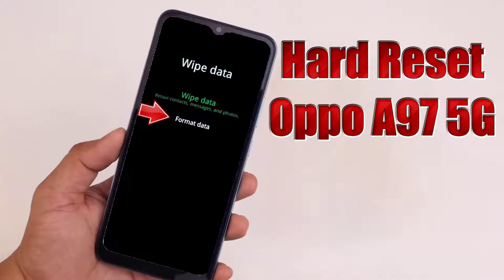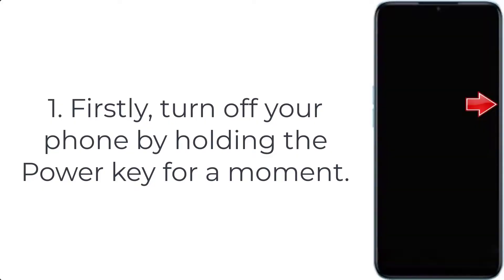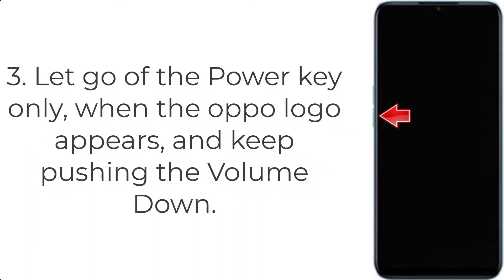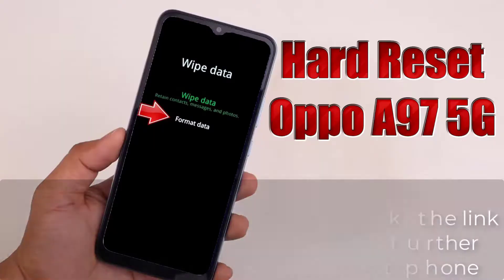How to hard reset Oppo A97 5G. Step 1: Turn off your phone by holding the power key. Step 2: Press the volume down and the power button. Step 3: Let go of the power key only when the Oppo logo appears, and keep pushing the volume down.